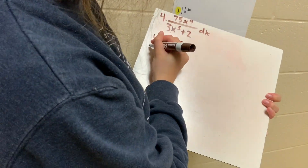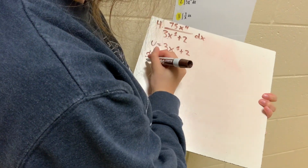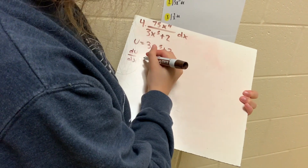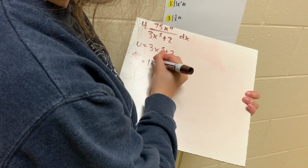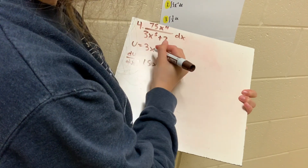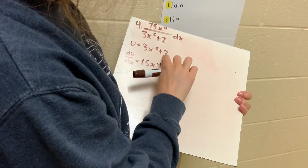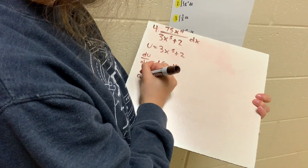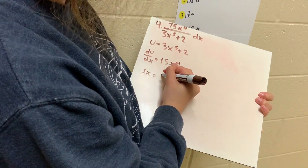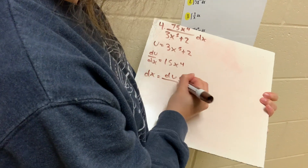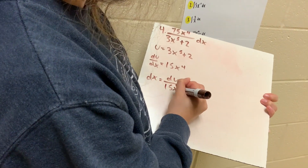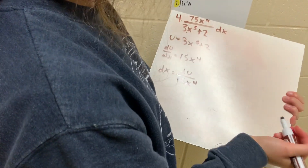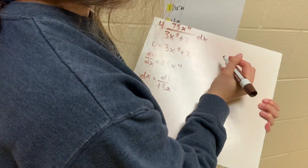Next you'll find the derivative, which is du over dx. And to do that, you bring down the exponent: 5 times 3 is 15, x to the fourth because you subtract 1. And the 2 with the constant rule cancels out. Next we'll do dx is equal to du over 15x to the fourth because you cross multiply. Next you can use the equation that you were given, which is 75x to the fourth.